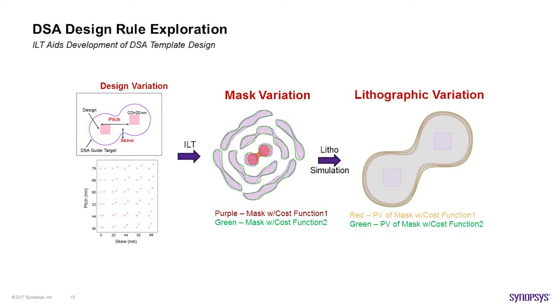This second DSA example is similar to the design exploration shown earlier. For DSA doublets, we want to discover the best design in terms of pitch in one direction and skew in another direction for a pair of contacts printed with DSA. We show a complex mask with a lot of arbitrary angles, and also how tuning different cost functions allows ILT to naturally produce different solutions — focusing on either exposure latitude or depth of focus depending on what is most critical. You can tune the ILT cost function and it will naturally adjust the solution to deliver better performance for the metric you're interested in.